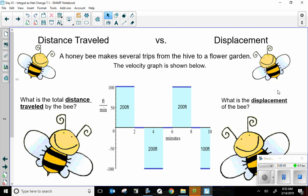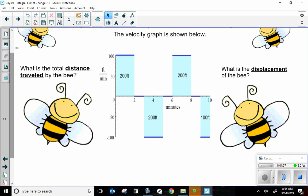Let's compare distance traveled versus displacement. A honeybee makes several trips from the hive to a flower garden. The velocity graph is shown below. Area under the curve represents total distance. When we first learned about integrations, we learned that integrals measure the area under the curve. If the curve is velocity and we integrate, we get distance or position.